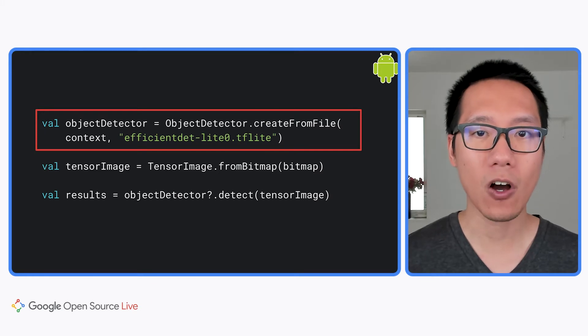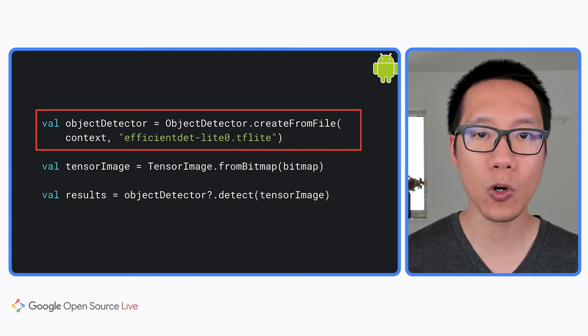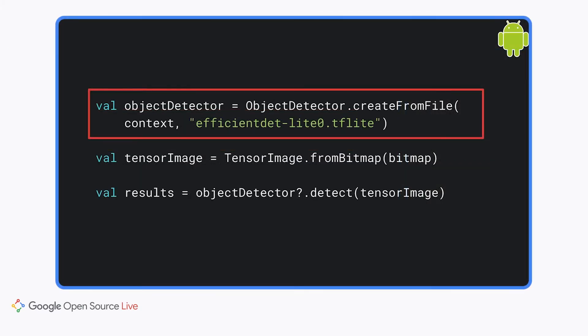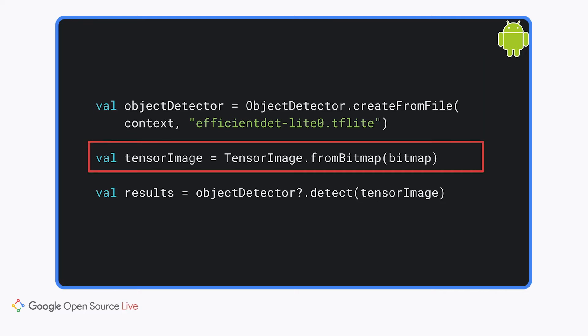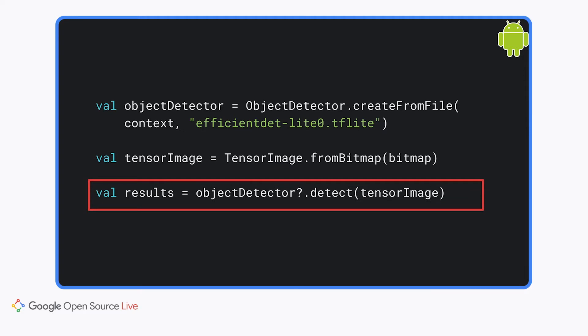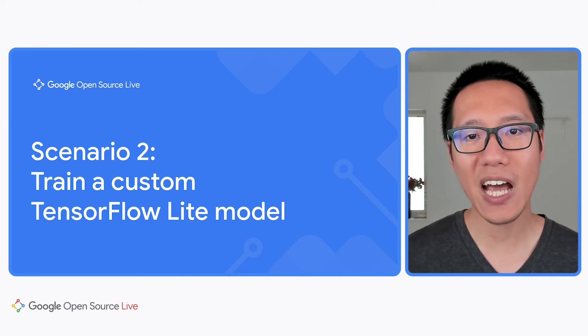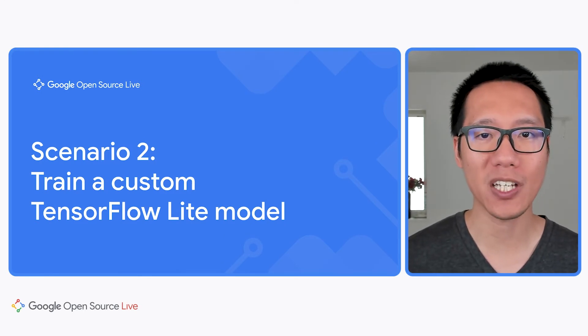TensorFlow Lite supports many different platforms including Android and iOS. Integrating a pre-trained model to a smartphone app is just as easy. Here's the Kotlin code to integrate the object detection model into an Android app: create an object detector with the TensorFlow Lite model from TensorFlow Hub, create a TensorImage from the Android Bitmap object, and call the detect function to get back the list of detected objects — similarly to the Python API.